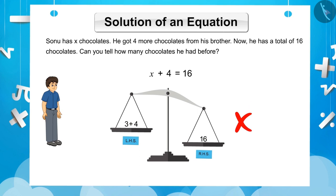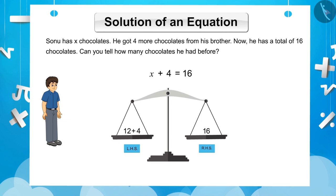Now, let us put 12 in the place of X. As you can see, now LHS and RHS are equal. Therefore, the value of X is 12.